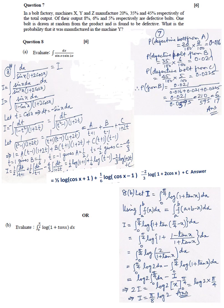X minus 1 minus 2 upon 3 log 1 plus 2 cos X plus C. Question 8B: Answer 5 upon 8 log 2.